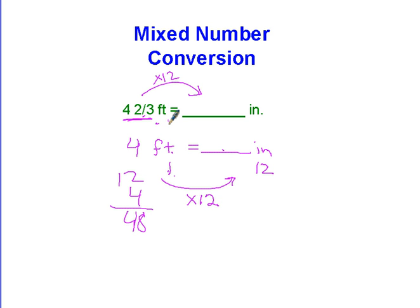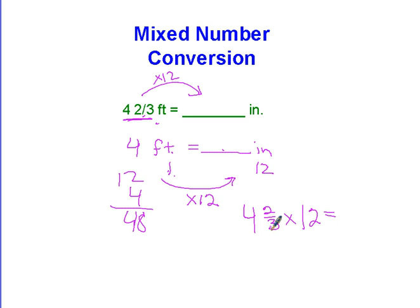It's the exact same process, except I cannot multiply mixed numbers in the state that they're given to me. I have to rewrite the mixed number as a fraction. So I go 3 times 4 is 12, 12 plus 2 is 14. So this is equal to 14 thirds times 12 over 1.